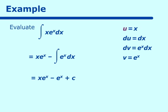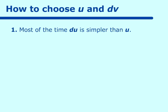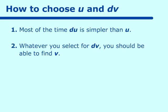Going back: we picked U to be x and dV to be e^x. How do we choose these? Most of the time, dU is simpler than U — if we choose x² to be U, its dU is 2x. Second, whatever you select for dV, you should be able to find the antiderivative V. You cannot choose dV to be ln(x) right now because you do not know the antiderivative of ln(x). And V should be simpler than dV most of the time.